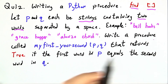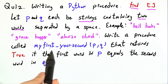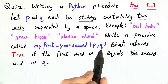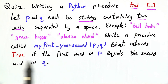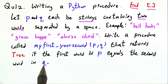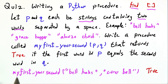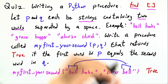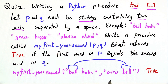I'd like you to write a Python procedure called my_first_your_second that takes two arguments, p and q, and returns true if the first word in p equals the second word in q. For example, my_first_your_second of 'bell hooks' and 'hopper bell' would return true, because the first word here matches up with the second word there.